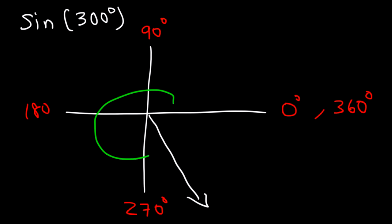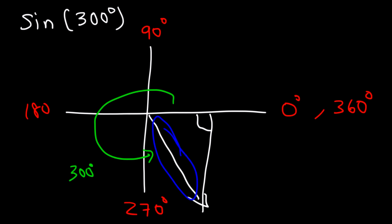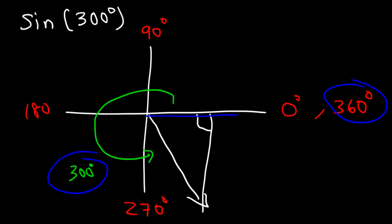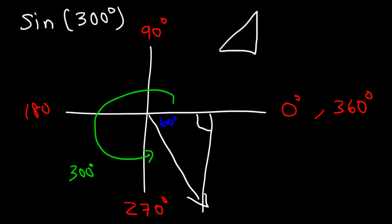This angle here is 300 degrees. Now let's turn this into a right triangle. The reference angle is the angle between the terminal side and the x-axis, so it must be the difference between 360 and 300. Therefore, the reference angle is 60 degrees.